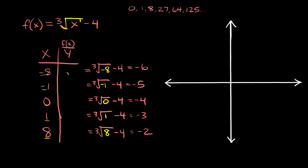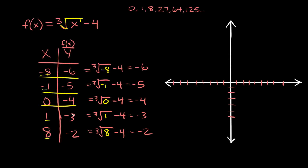So here are our y or f of x values: negative 6, negative 5, negative 4, negative 3, and negative 2. To graph this, our x values go from negative 8 to positive 8, and for y it goes from negative 6 to negative 2. So we plot: negative 8, negative 6 is right here; negative 1, negative 5 is right there; and 0, negative 4 is right there.